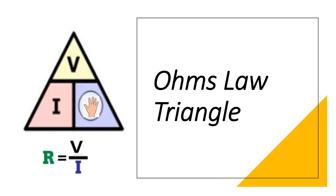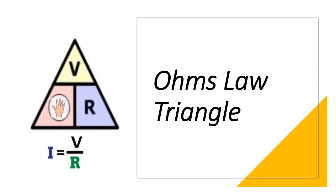If you know the voltage and current and want to know the resistance, cross out the R in the pyramid and calculate the remaining equation. If you know the voltage and resistance and want to know the current, cross out the I and calculate the remaining two symbols.